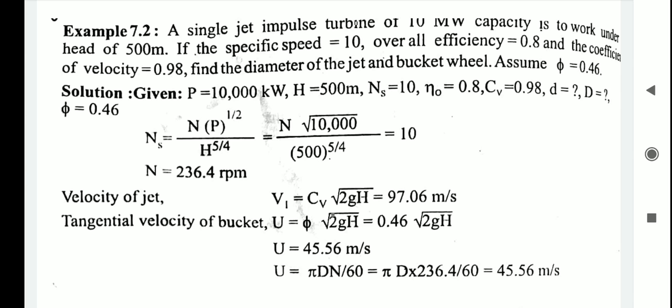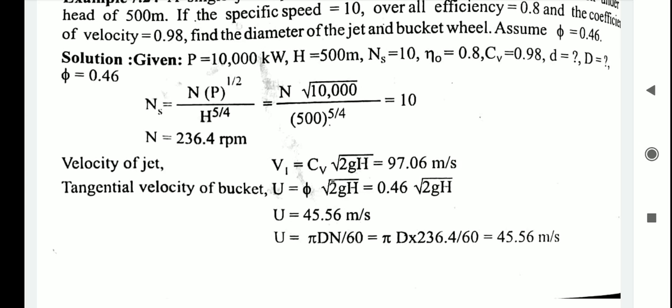First, substitute values into the specific speed formula: Ns = N × √P / H^(5/4). We need to find N, the rotational speed. Ns is known as 10, which equals N into the square root of P (10,000) divided by H^(5/4), where H = 500.